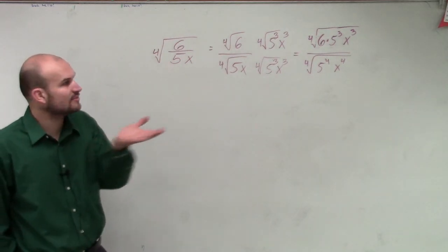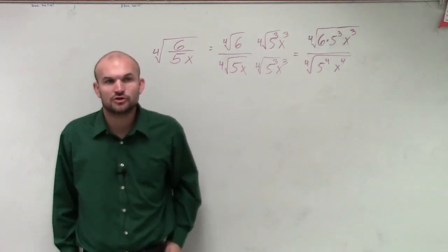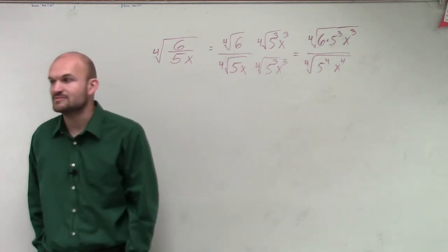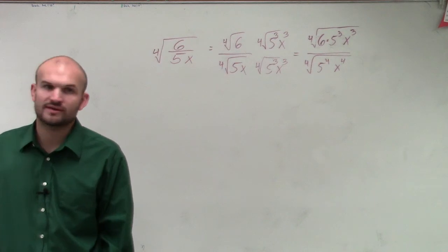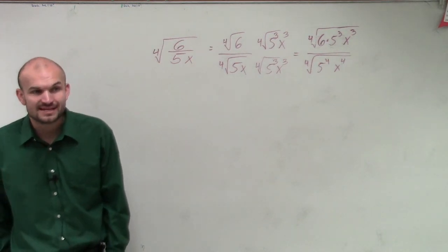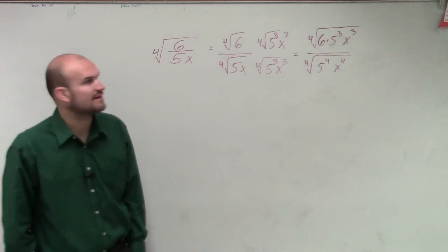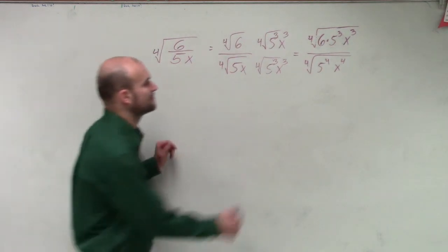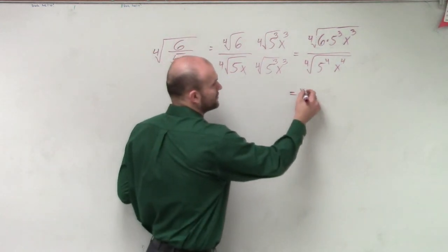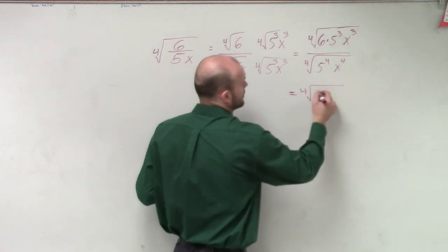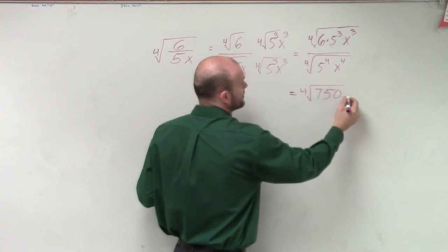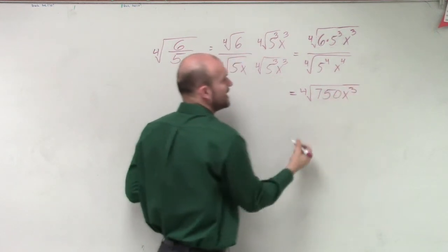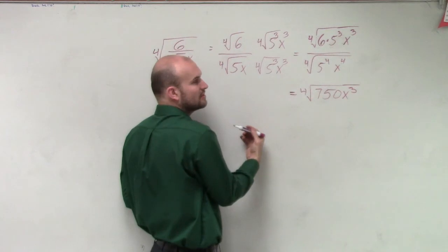All right, so now we just simplify. So 5 cubed, so 5 times 5 is 25 times 3 is 125 times 6 would be 750. So I have the fourth root of 750 x cubed. Then, what happens with the fourth root of 5 to the fourth and x to the fourth?